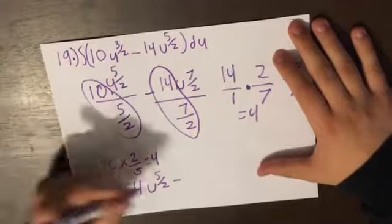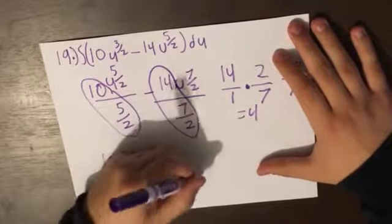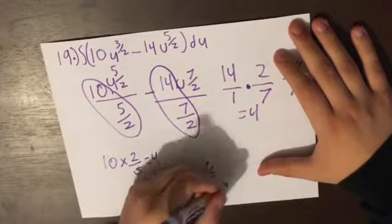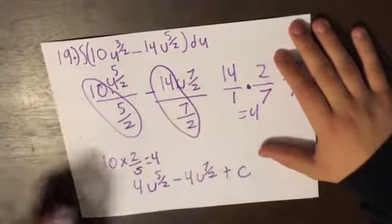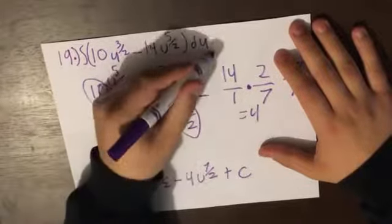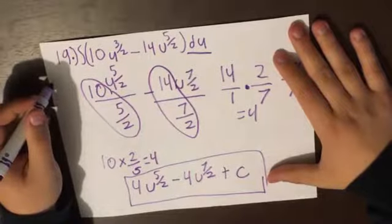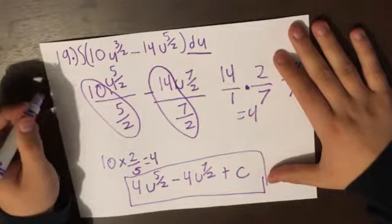So we got actually kind of lucky here that both equal 4. So it's going to be 4u^(7/2). And that right here, plus constant of course, since we're integrating. And that is going to be your answer for question 19, section 7.1.